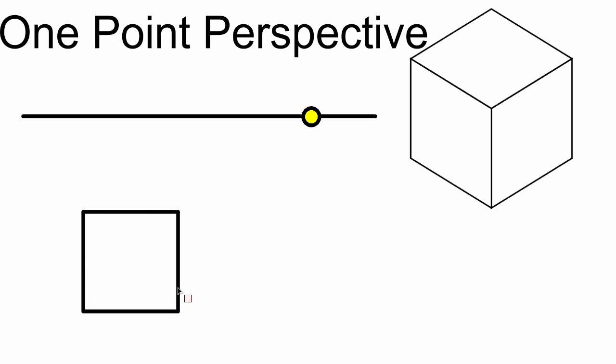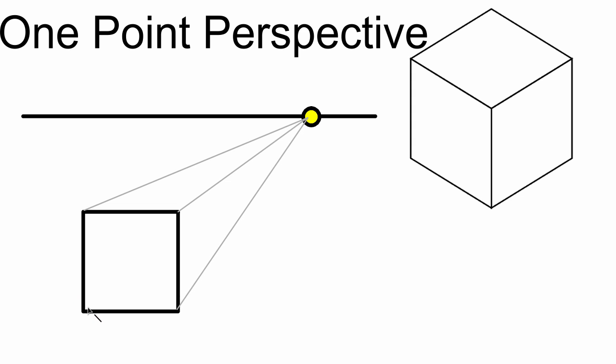So I'm going to start off with my front view — that's roughly my front view. If you're actually drawing it, you'd measure it out and make sure it's correct, but that's what I'm going with for now. Then I'm going to take construction lines from any of the corners back. I have four corners, and I'm going to draw my construction lines back to that single vanishing point. I just need to draw my front and top views now.